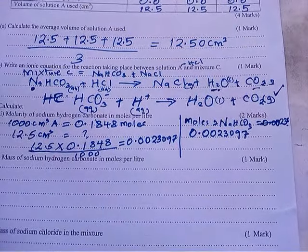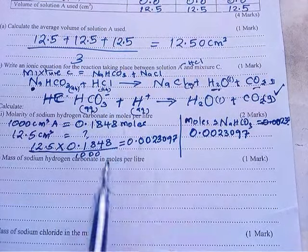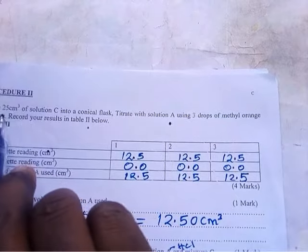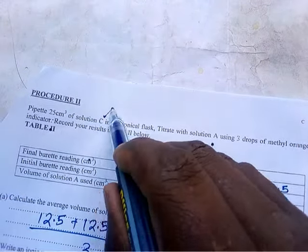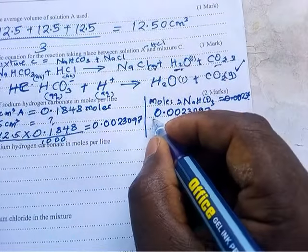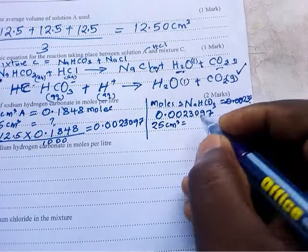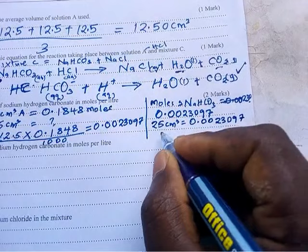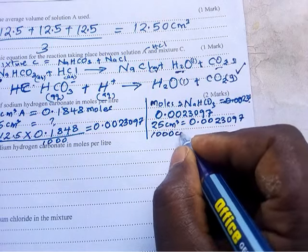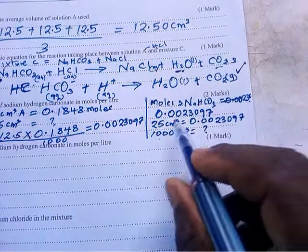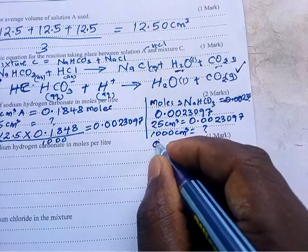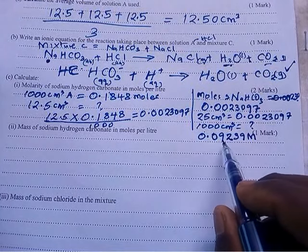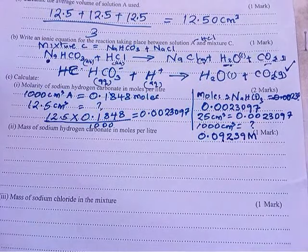Now calculate the molarity of sodium hydrogen carbonate. Molarity is moles per liter. We have 0.0023097 moles in 25 cm³ (the volume of solution C pipetted). So, in 1000 cm³: molarity = 1000 × 0.0023097 ÷ 25 = 0.09239 M. That is the molarity of sodium hydrogen carbonate in solution C.